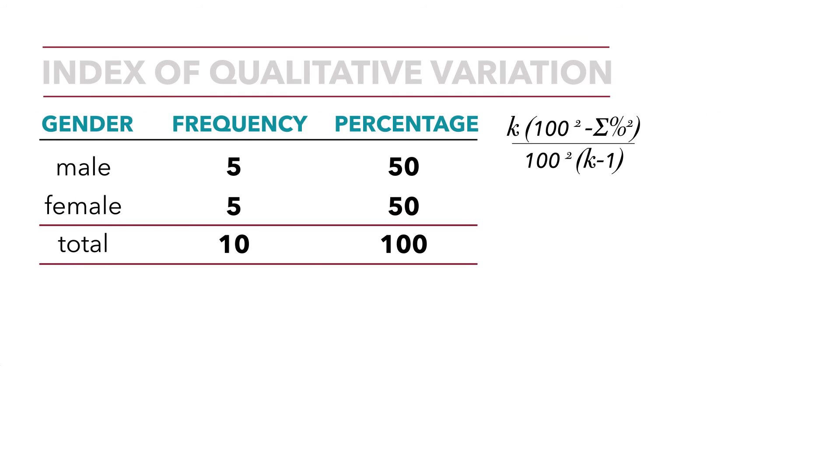Now we'll walk through the example in which we have complete variation. We can clearly see that with five males and five females, our distribution could not be any more diverse. Let's plug in our numbers and confirm that we calculate an index of qualitative variation of 1.0, maximum amount of variability.